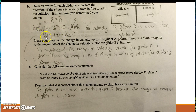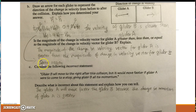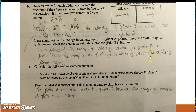From my equation, the final velocity for A is bigger than the final velocity for B, so the velocity of glider B is slower than glider A. The magnitude of the change in the velocity vector for glider A is greater than the magnitude of the change in the velocity vector for glider B.